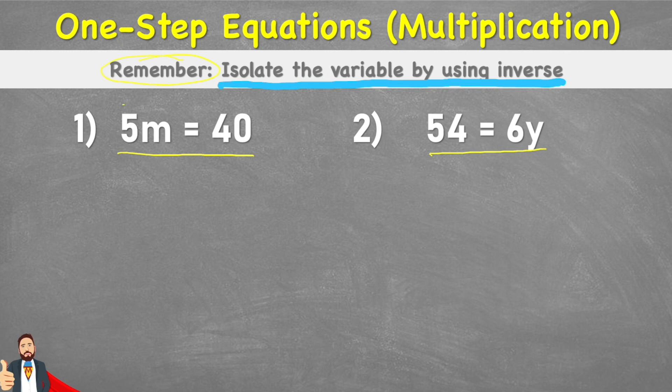So what we need to understand is that when a number is by a variable or a letter like this without any symbol between it, it's essentially saying multiplication. So this can be rewritten as 5 times m equals 40. And 5 times m equals 40 is one of four number sentences in the same number family.